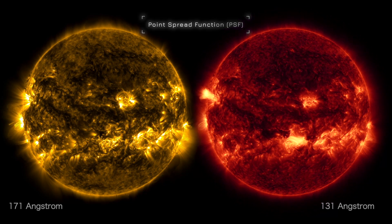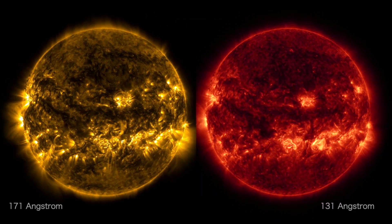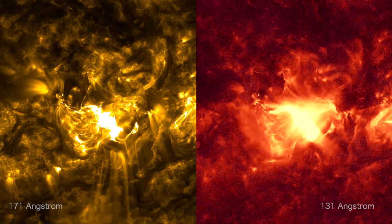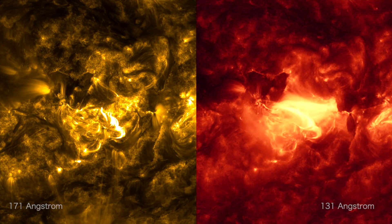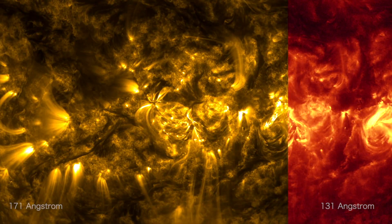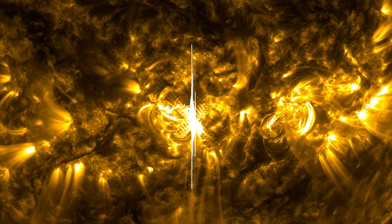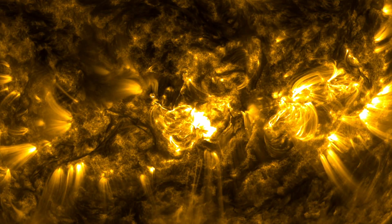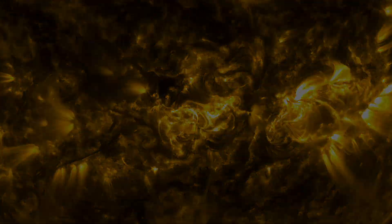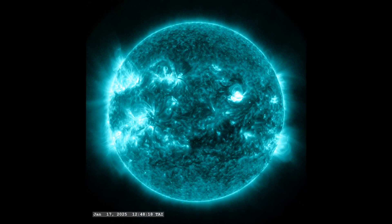The PSF describes how a point source of light, such as a distant star, is represented due to imperfections and diffraction — the light spreads out, causing blurring in the image. By understanding and correcting the PSF, scientists can enhance image clarity, revealing finer details of cosmic events.